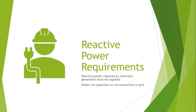A capacitor bank at the load side locally generates reactive power, thereby reducing the overall reactive power demand as seen from the generator side. The major limitation of the induction generator is that it requires reactive volt-amperes from auxiliary equipment — an induction generator cannot generate reactive volt-amperes.